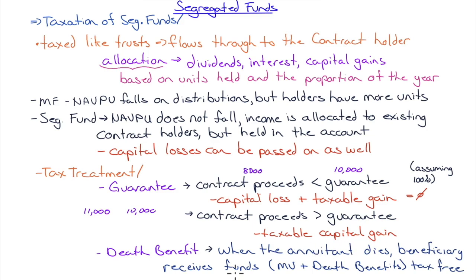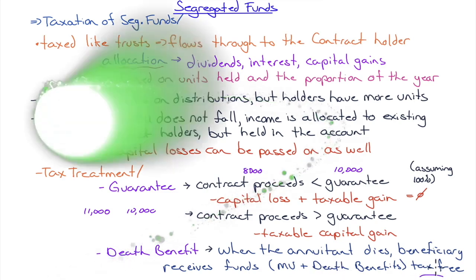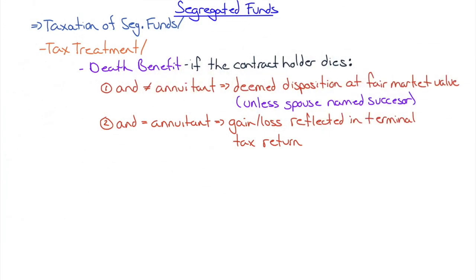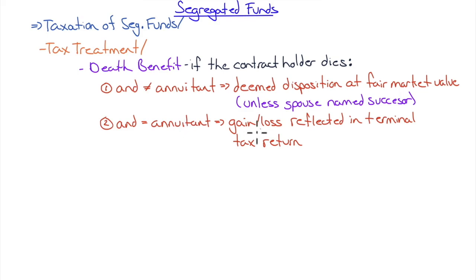Tax treatment of the death benefit: when the annuitant dies, the beneficiary receives the market value of the funds plus any death benefit — tax free. If the contract holder dies and is not the annuitant, it is a deemed disposition at fair market value — the gain is in the terminal tax return — unless the spouse is named as successor, in which case there is no deemed disposition. If the contract holder dies and is the annuitant, the gain or loss is also reflected in the terminal tax return.